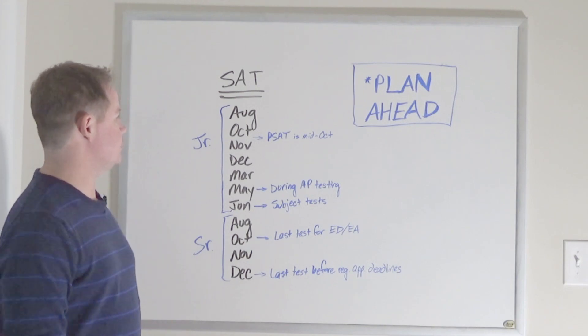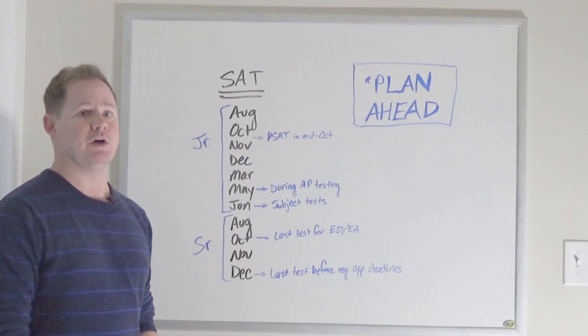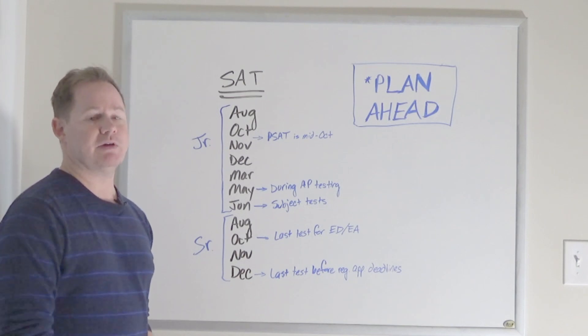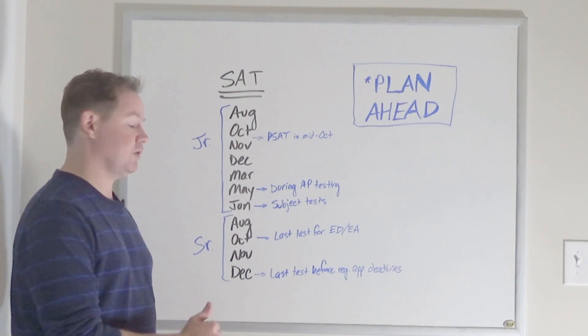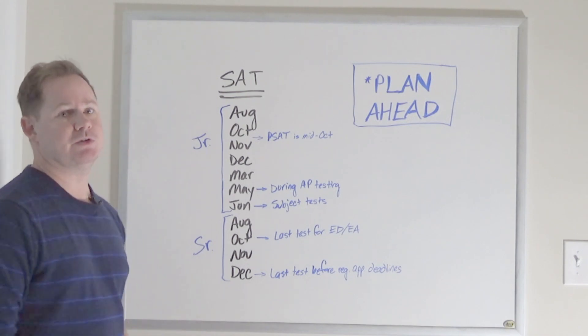So here we see our available test dates starting in August of your junior year. It goes August, October, November, December, March, May, June of your junior year, and then you have the fall tests of your senior year - August, October, November, December of your senior year as possible test dates.